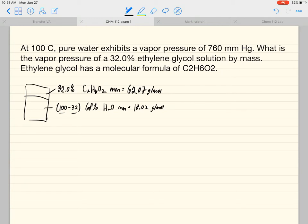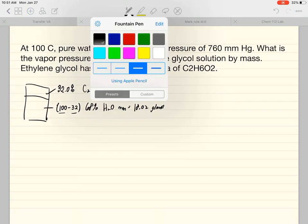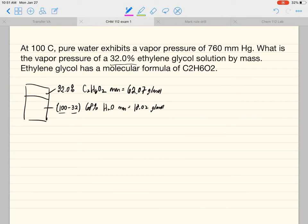Now there's other information here in the word problem, but basically what we need to do is whenever you're given grams or percent, we need to calculate moles. So what we do here is we're going to assume that the total mass here is 100 grams. We could use whatever we want, but it makes the math a little bit easier. So 100 grams total means 32% of 100 grams, so 32 grams of our ethylene glycol.